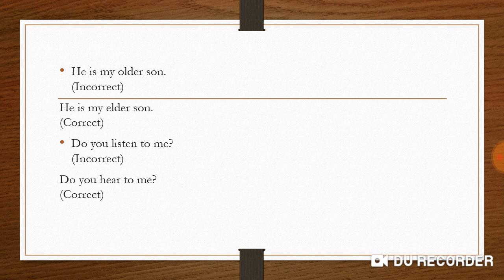Next: 'Do you listen to me?' 'Listen' means to pay attention — to hear attentively. If someone is not paying attention to you, you wouldn't use 'listen.' Here 'hear' is appropriate. So the correct sentence is: 'Do you hear me?' — not 'listen to me.'